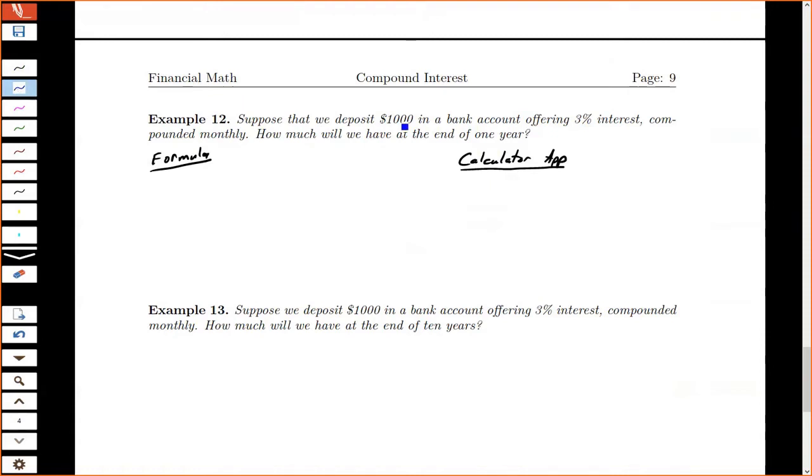And let's see how it goes. So first, let me list my given information. We're depositing $1,000, so P is equal to $1,000. It's 3% interest. So my interest rate is 0.03. Compounded monthly, so the N is 12. How much will I have at the end of the year? So I want to find A.